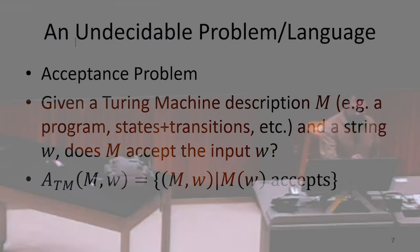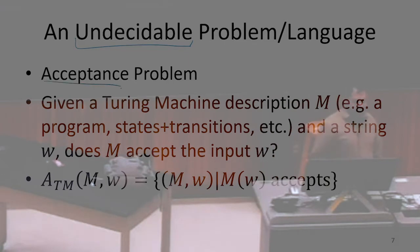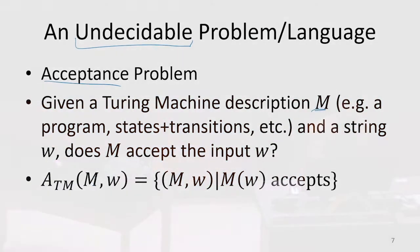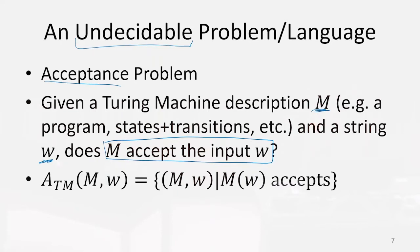Last class, we talked about some undecidable problems, or languages, or undecidable functions. One example was the acceptance language, or acceptance function. The way that this behaved was: if I gave you some Turing machine and a potential input string, we want to answer this question — does that Turing machine accept that input string? So this is the acceptance problem, or the acceptance function, or the acceptance language. These are all similar ways to talk about the same thing.